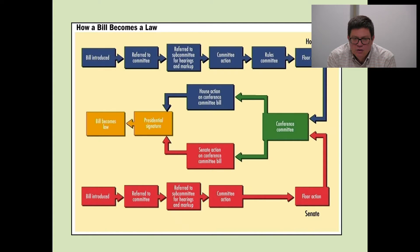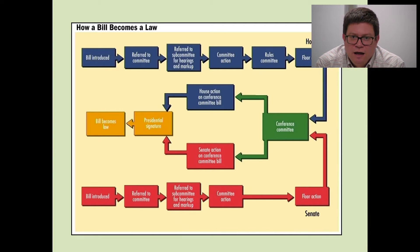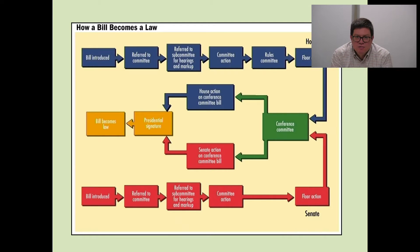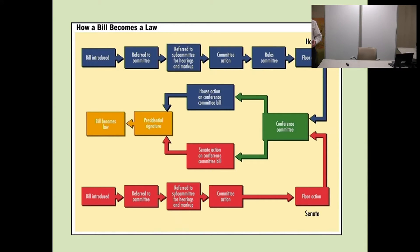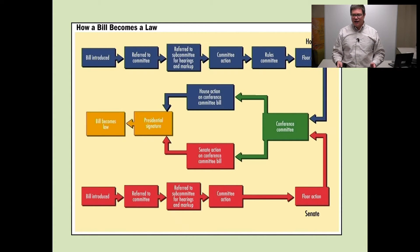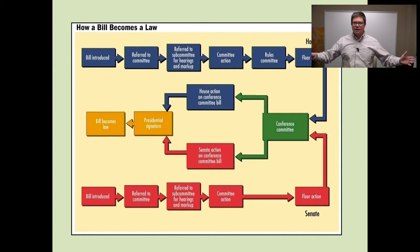If we take a look here, you can see the House and Senate both have very similar processes. In the upper left-hand corner, a bill is introduced and then goes to a committee. Those committees are set up on the basis of public policy issues. It's referred to the committee, the committee looks at it, holds hearings, and then says, let's pass this on to the rest of Congress.